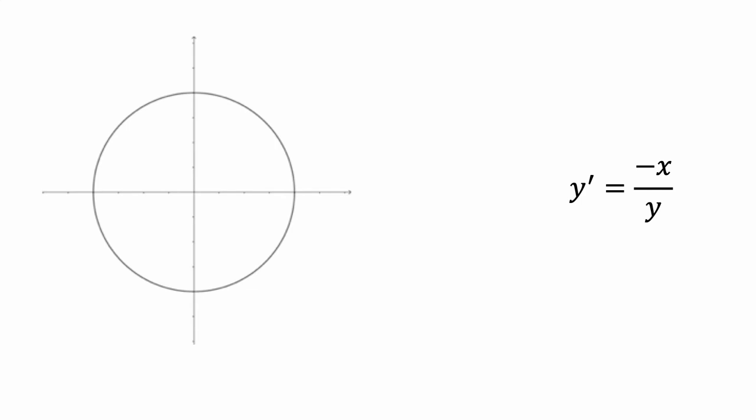So how about the tangent line at this point, which has the coordinate (0,r). Our formula says that the slope of this tangent line should be negative 1 times the x-coordinate, 0, divided by the y-coordinate, r, which equals 0. And that computation matches what we can see in the graph, that the tangent line should have 0 slope, be horizontal.